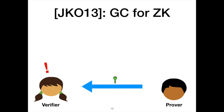What I have shown so far is truly only honest-verifier zero-knowledge — there is nothing preventing Alice from constructing an invalid proof challenge. JKO goes on to show how to enhance this protocol to account for malicious verifiers. That's outside the scope of this talk, though our paper also works in the malicious verifier setting.